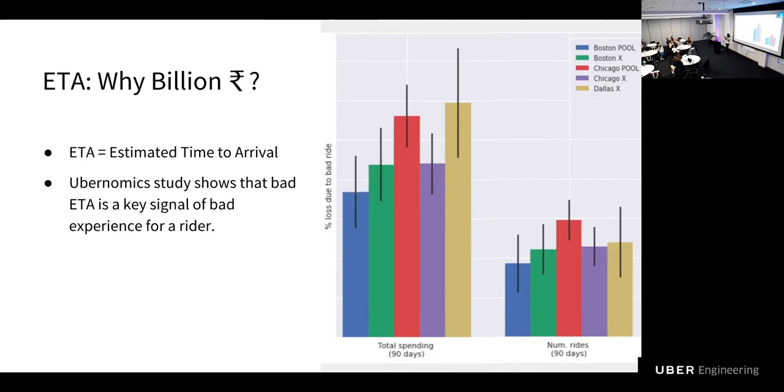So what they did was they picked the top three percentile of trips with bad ETAs. And then they found similar trips with a good ETA, with the same origin, same destination, same neighborhood. And then they tried to follow the ride taking behavior of the users with bad ETAs, and the ride taking behavior of users with good ETAs. And this plot basically shows on the x-axis, the percentage loss due to a bad ETA. And you see two clusters, one is the total spending and number of rides. The way to read this plot is a higher bar means that a bad ETA has a really high impact, and the lower bar is it doesn't matter.